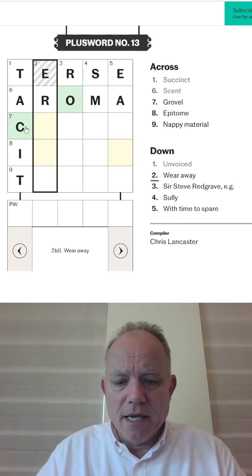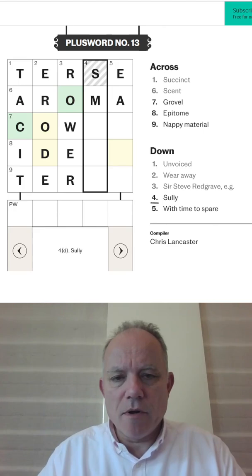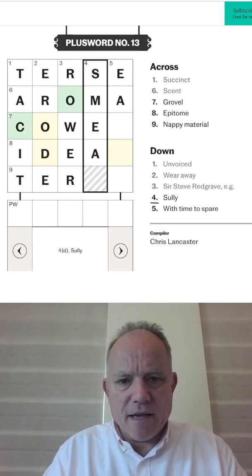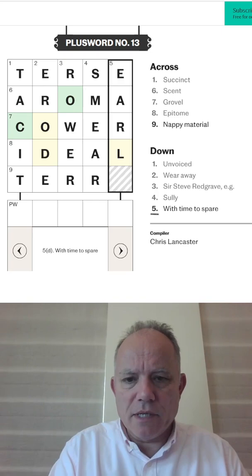Erode for wear away. Sir Steve Redgrave is a rower, which won't be familiar to Americans. To sully is probably smear. Yeah, that looks like it works. And with time to spare is early. That gives us words in all the across clues.